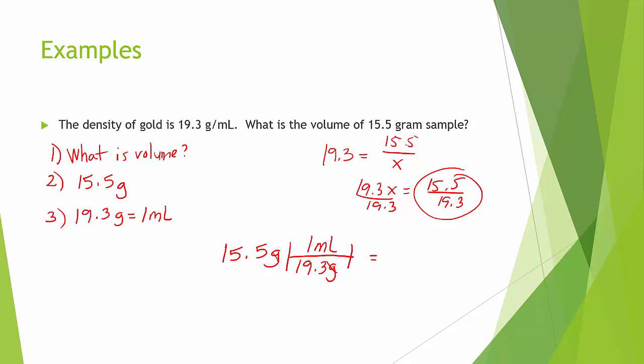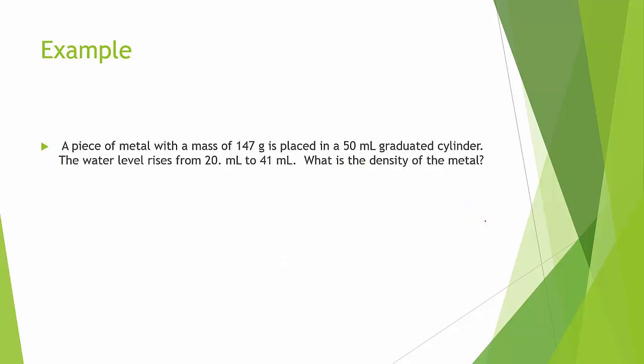So, in one step, we have solved for it versus having to do the algebra of setting up your problem. So, you would get 0.0803 milliliters. So, if they give you a density, you can use it to solve using dimensional analysis.